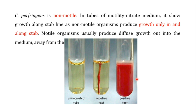Clostridium perfringens is non-motile. In the motility nitrate medium test, a non-motile organism like Clostridium perfringens shows growth only along the stab line. Motile organisms, by contrast, produce diffuse growth out of and away from the stab line throughout the medium.